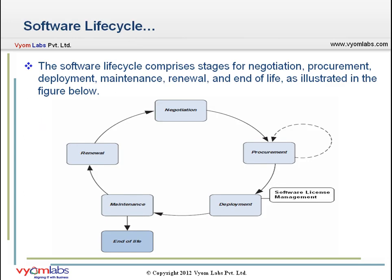Now let's talk about the software life cycle. As you can see in the figure, the software asset deployed into our infrastructure would initially go to the negotiation stage. From there, it would be procured, and after that it would be deployed. During deployment, we deal with software license management. Then after deployment, the software asset enters the maintenance stage, where it could end its life or go to the renewal stage.